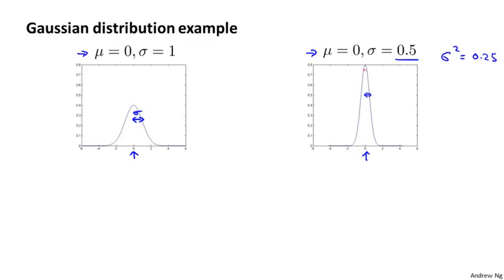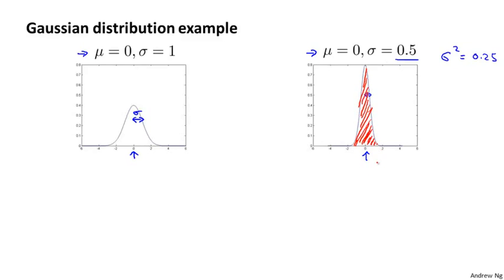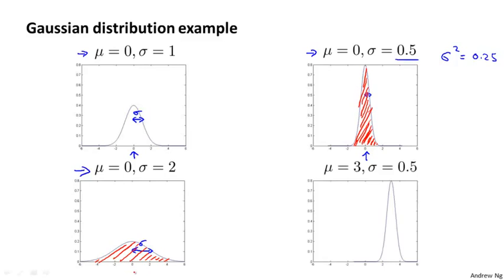Because this is a probability distribution, the area under the curve must integrate to one. So with sigma equals 0.5, the Gaussian density is twice as tall but half as wide. If sigma equals two, you get a much wider Gaussian density — the sigma parameter controls that wider width — and the area still integrates to one, making it shorter. Finally, if we change mu as well, such as mu equals three, the entire Gaussian distribution shifts so it's centered at three.